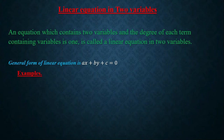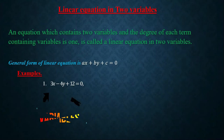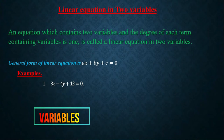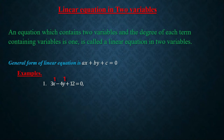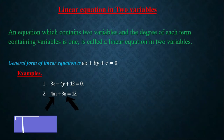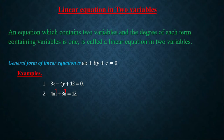Now for examples. First: 3x − 4y + 2 = 0. Here x and y are two variables, the power of x is 1 and the power of y is also 1, so this is a linear equation in two variables. Second: 4m + 3n = 2. Here m and n are two variables; m's power is 1 and n's power is also 1, so this is also a linear equation in two variables.